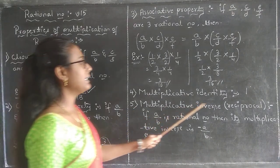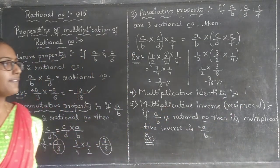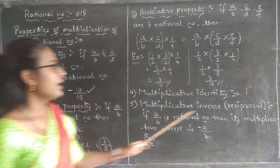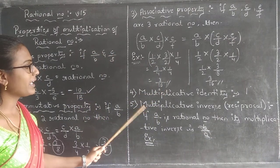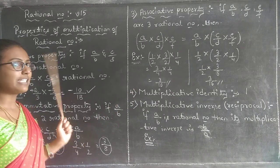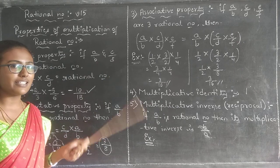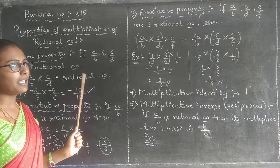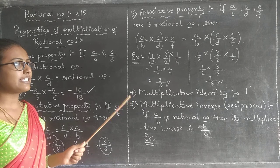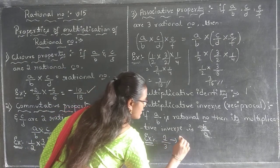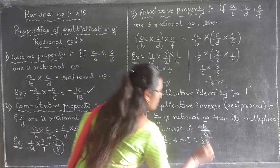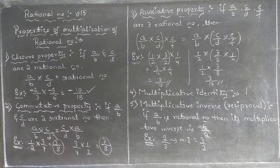The fifth property is multiplicative inverse, also called reciprocal. If you take any rational number A/B, its multiplicative inverse will be B/A. That is, we make the numerator as denominator and denominator as numerator. While teaching addition, I taught additive inverse — for A/B, additive inverse is minus A/B. Similarly in multiplication, the multiplicative inverse means making numerator as denominator and denominator as numerator. For example, if the number is 2/3, its multiplicative inverse is 3/2.